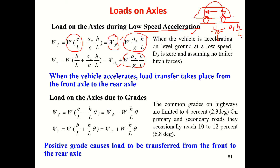If the wheel base length L is very long, the load transfer becomes smaller. If the center of gravity height h is very high, the load transfer will be large. If the acceleration ax is high, the load transfer is also high. So for given h and L values, load transfer depends on acceleration. The front axle loses load and the rear axle gains load.